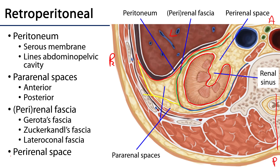There are pararenal spaces on either side of the perirenal fascia. The anterior pararenal space often envelops various retroperitoneal GI elements, and is sometimes referred to as the GI space. The posterior pararenal space typically contains only adipose connective tissue, or fat.